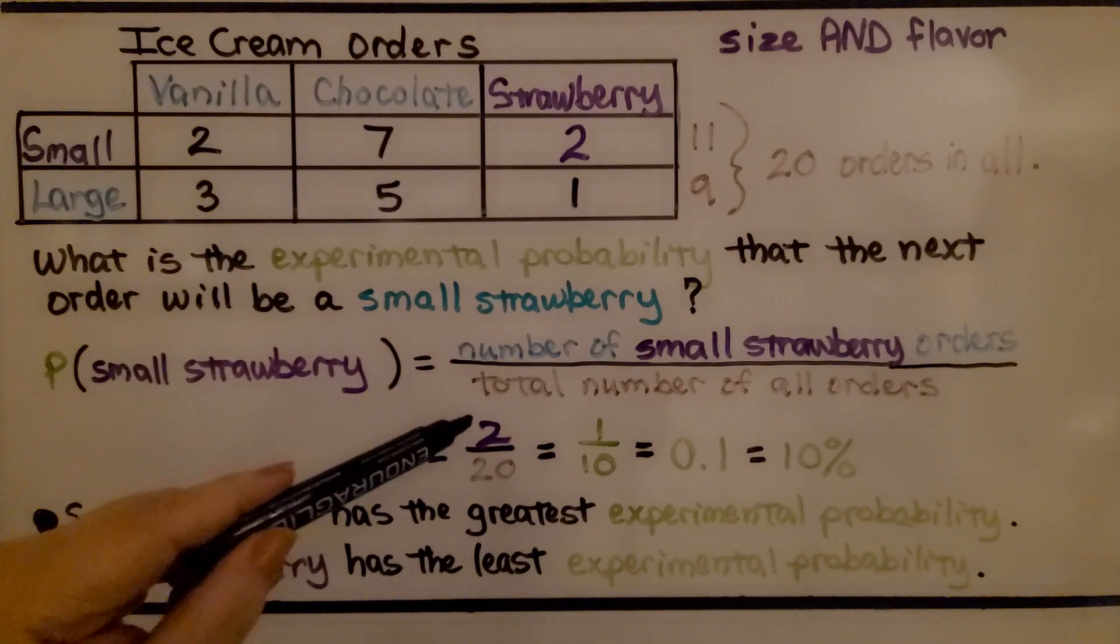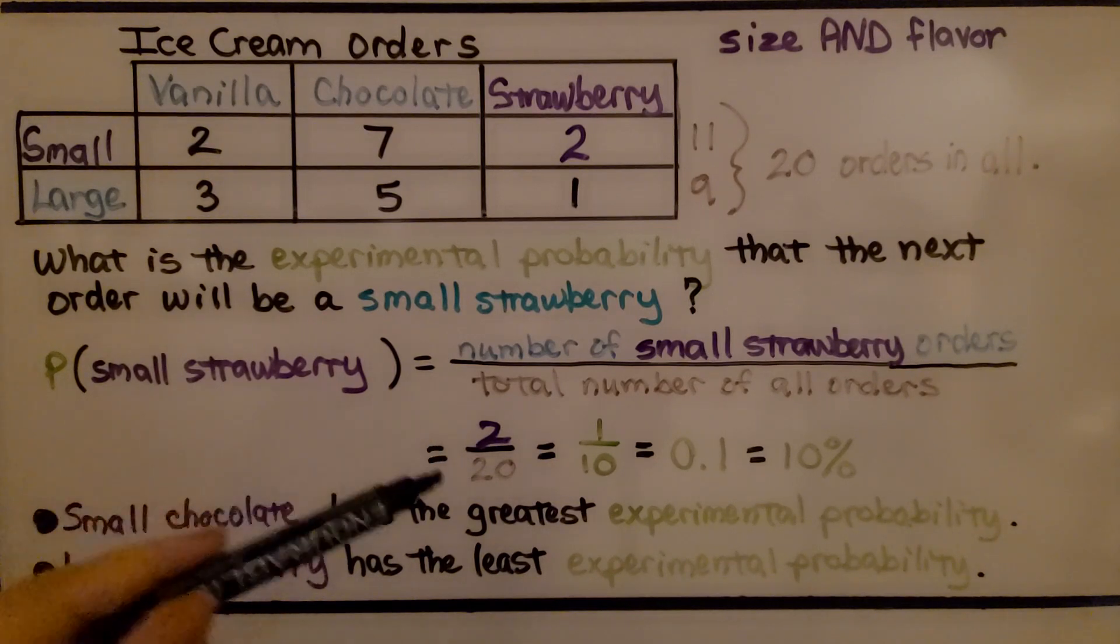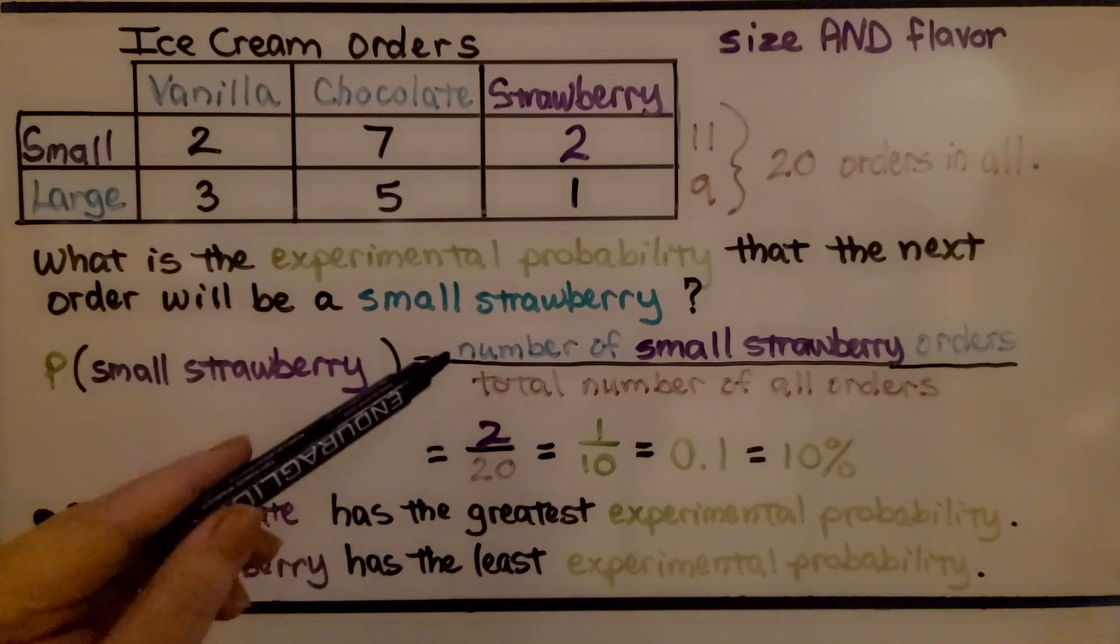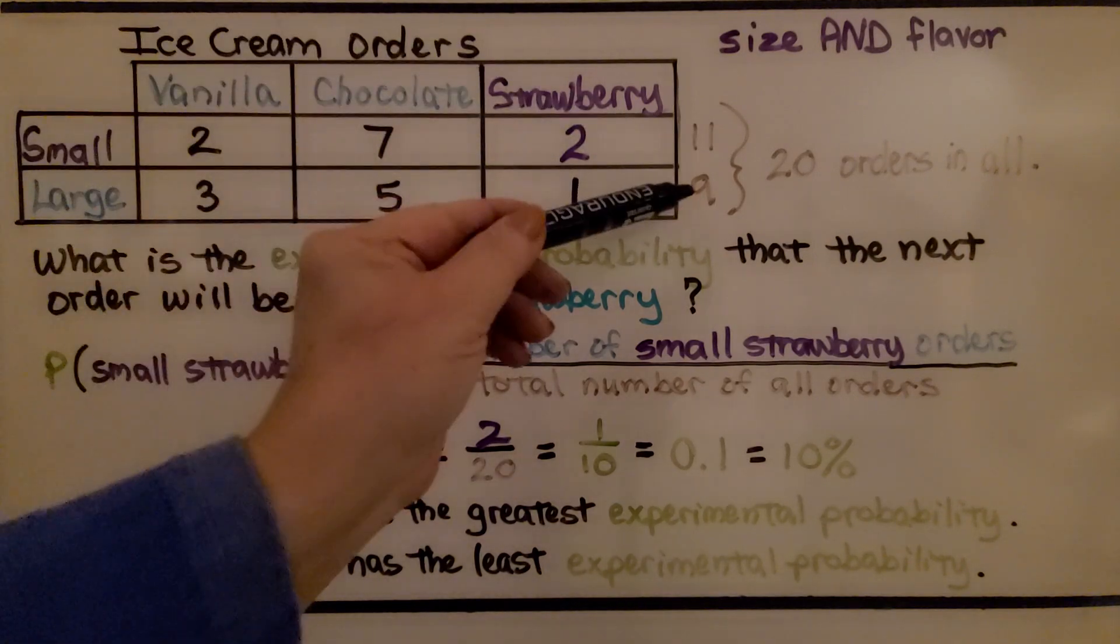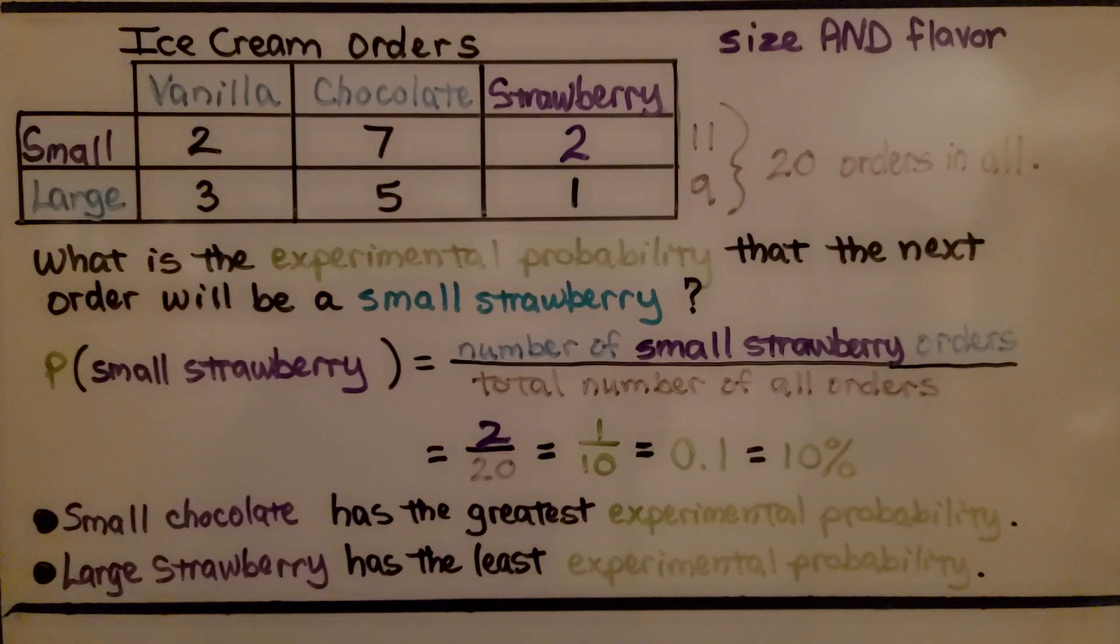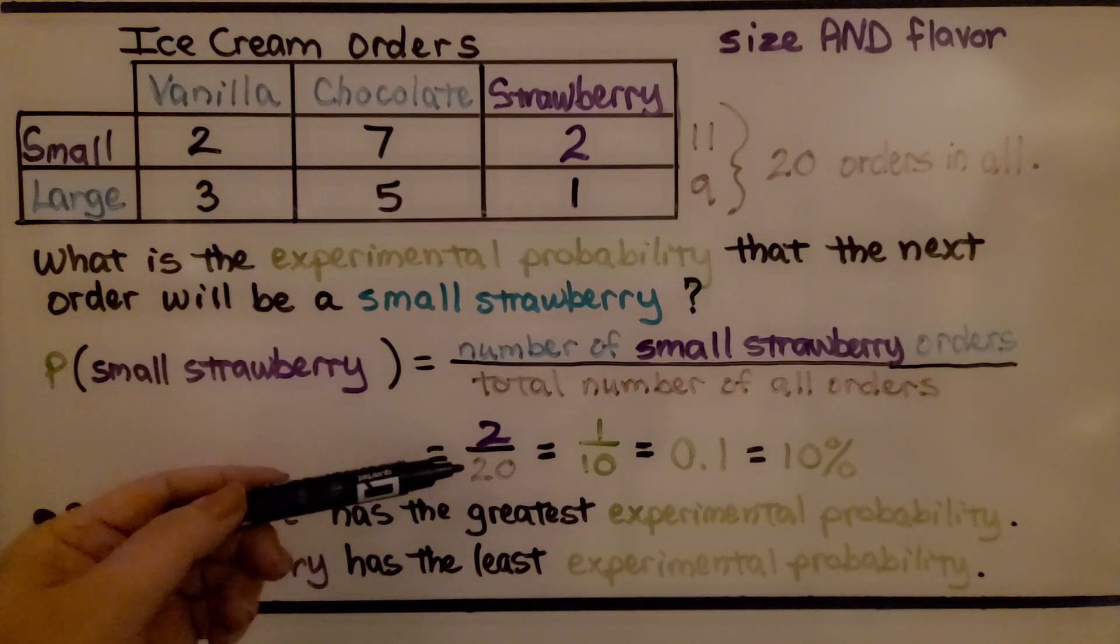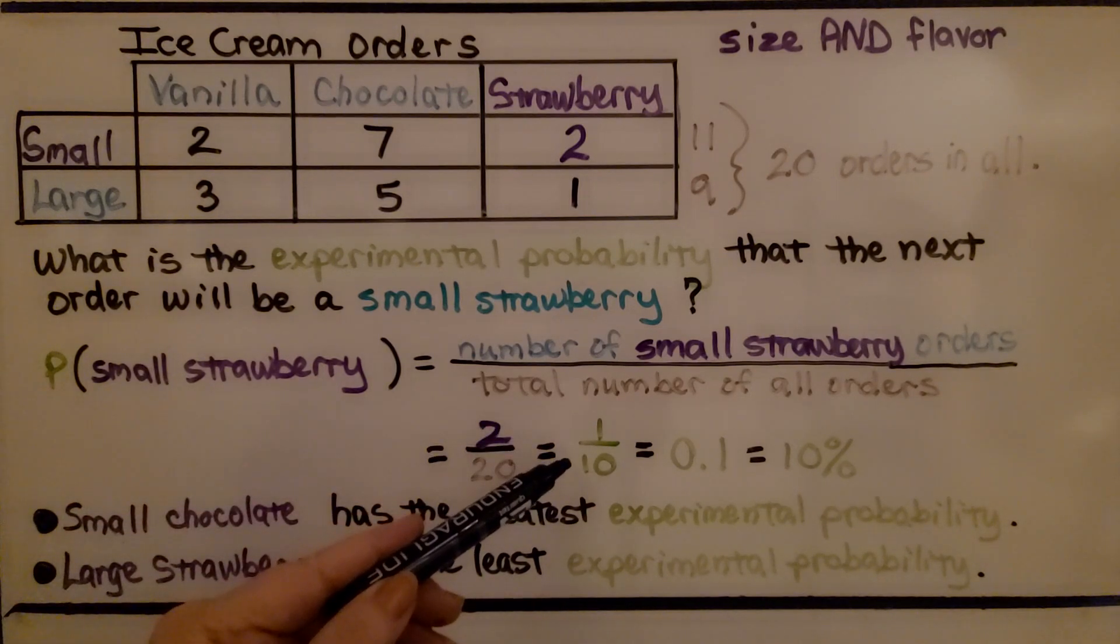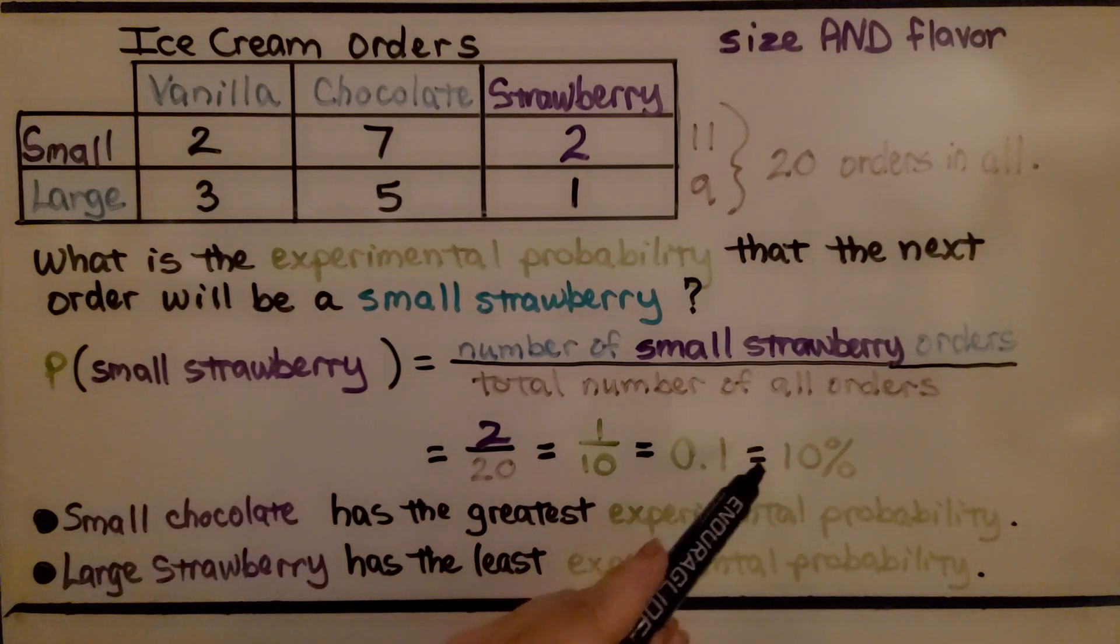That is going to be our numerator, the number of small strawberry orders. And the denominator is going to be the total number of all the orders. We have 11 plus 9, that's 20 orders in all. The probability of the next order being a small strawberry is 2/20, which we can simplify to 1/10. We can write it as a decimal as 0.1, or we can write it as 10%.